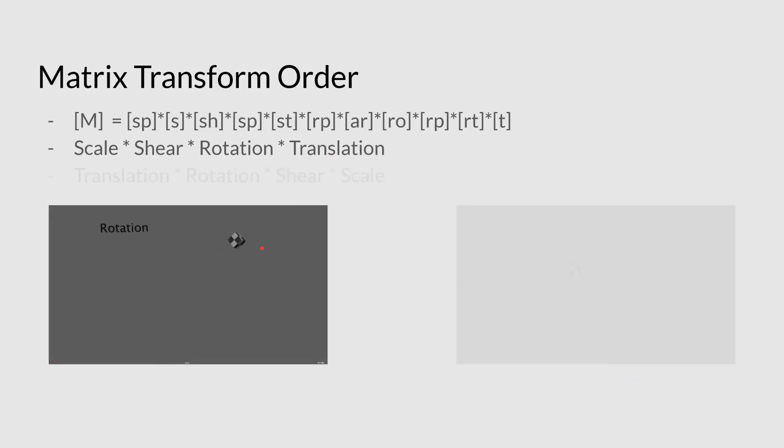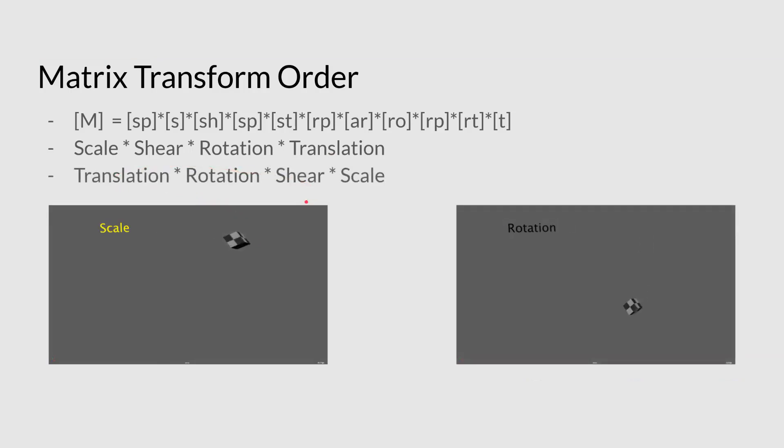Now, what would happen if we change that order? Well, this would happen. We would translate, and they would rotate, end up here, we'd shear down there, and then we'd scale off. So you can see there's quite a bigger difference in the way that we deal with these matrices here.